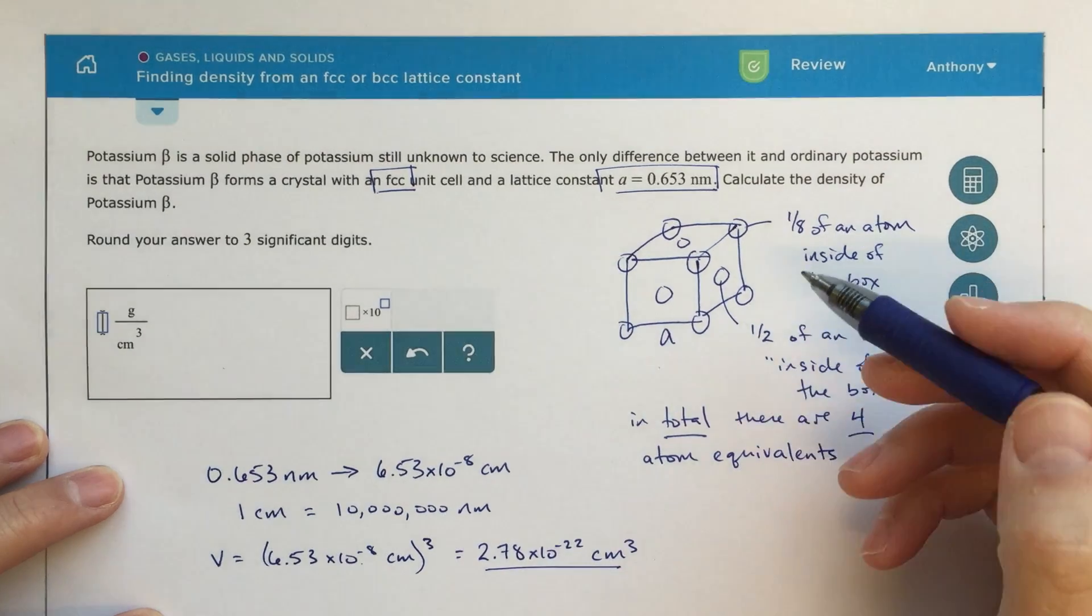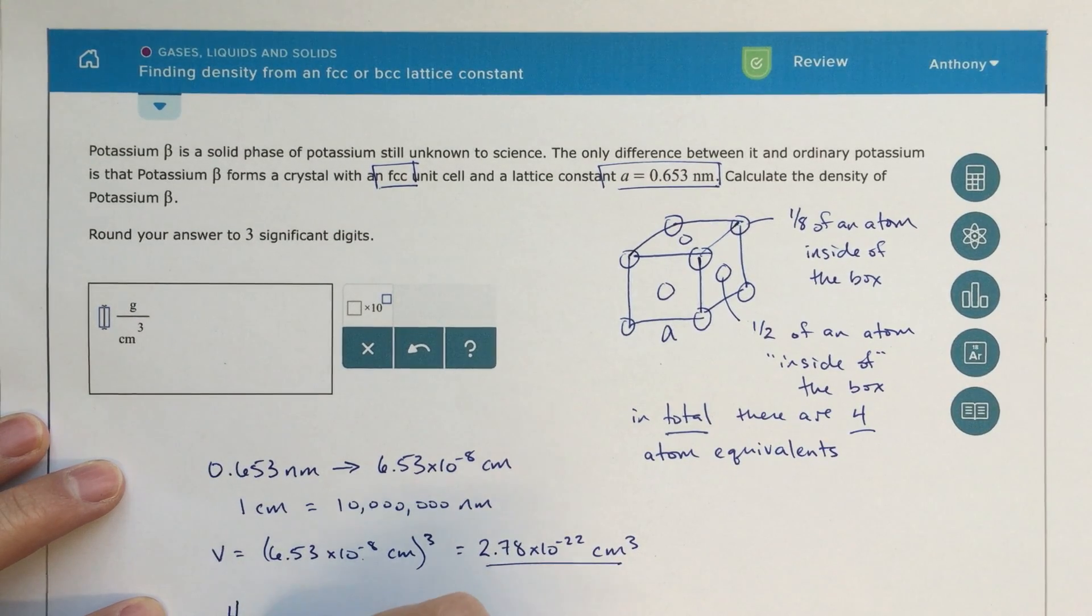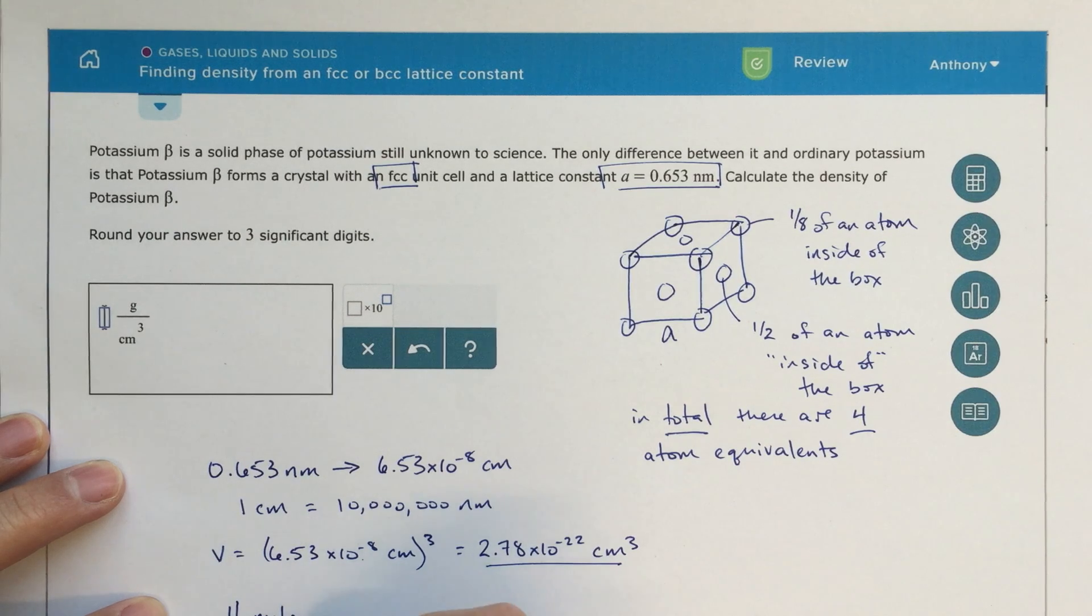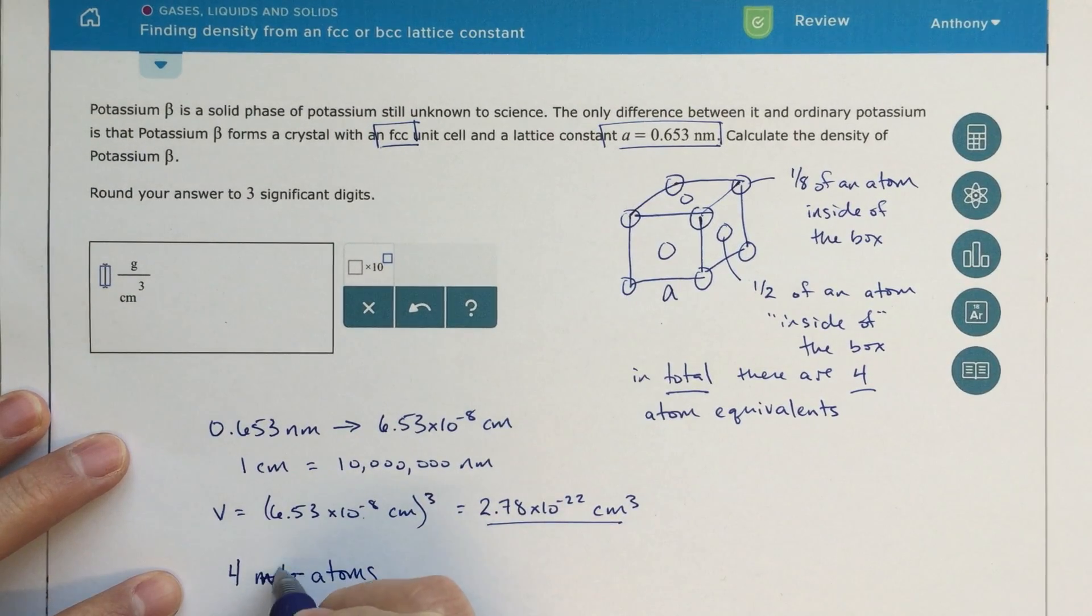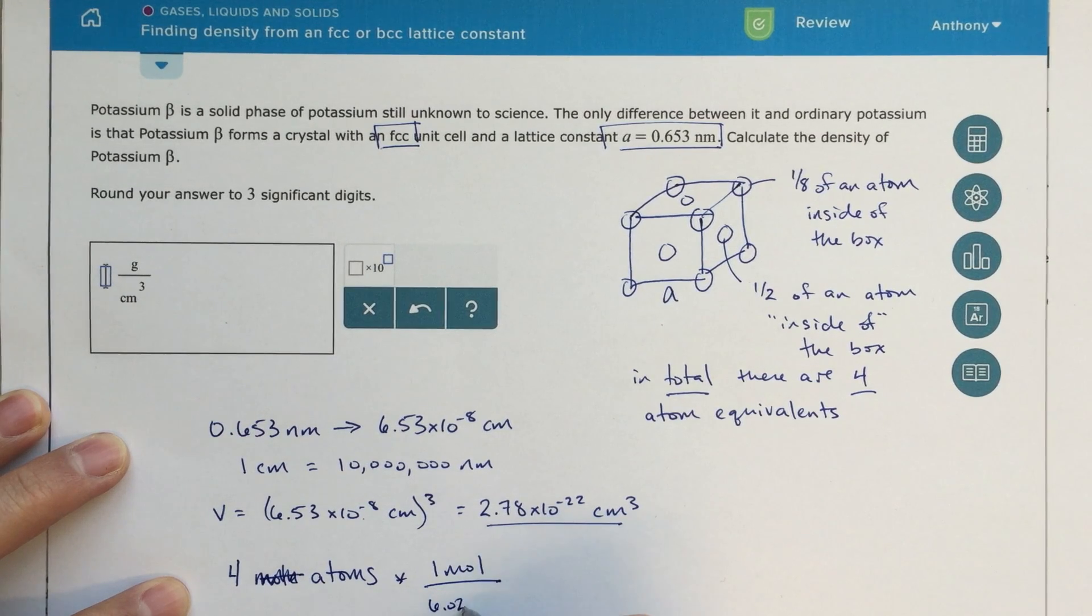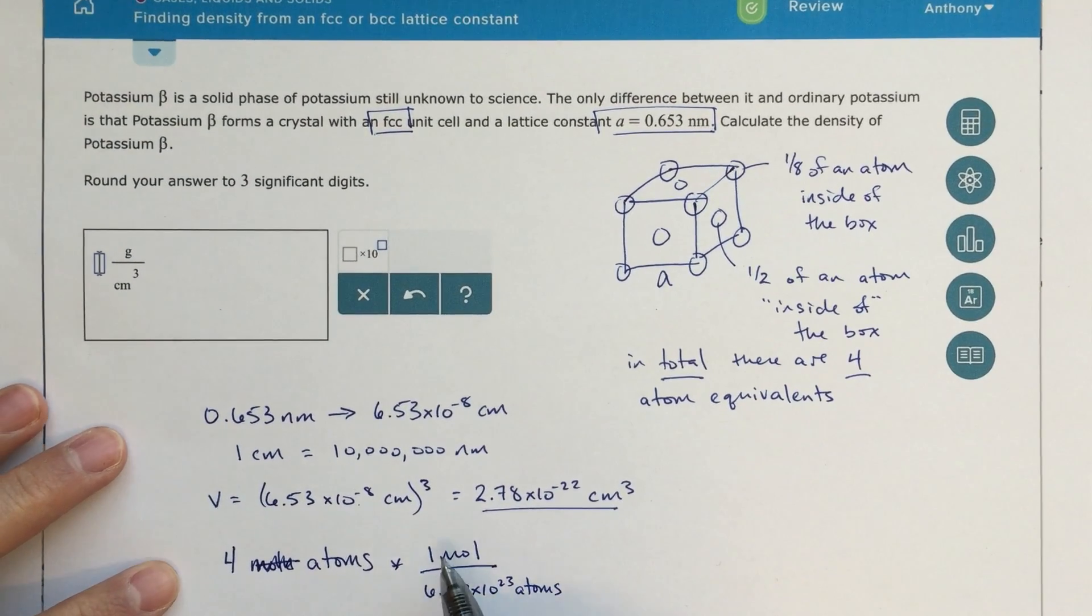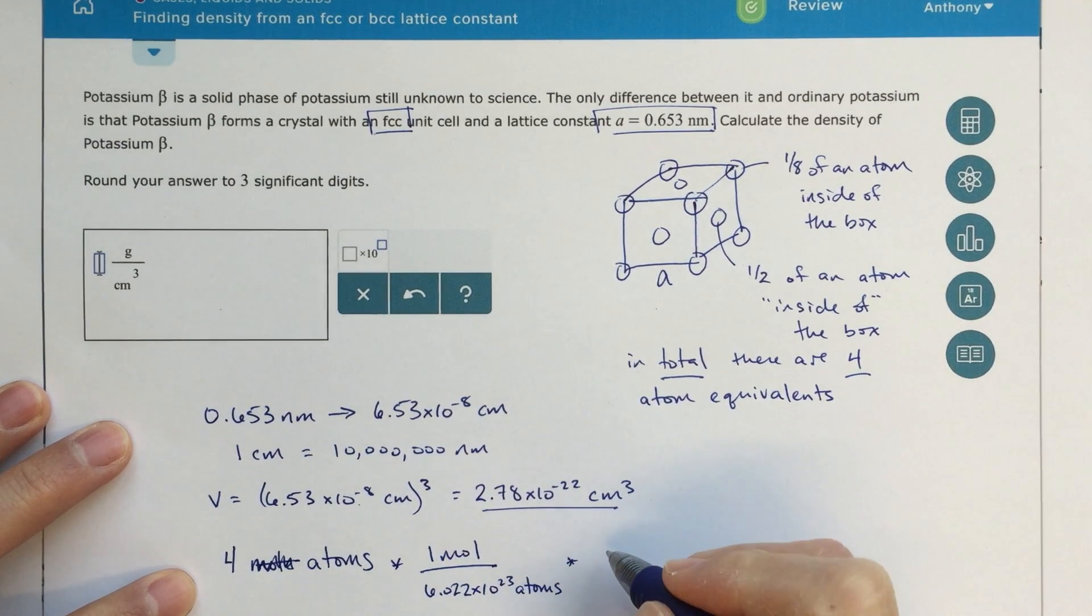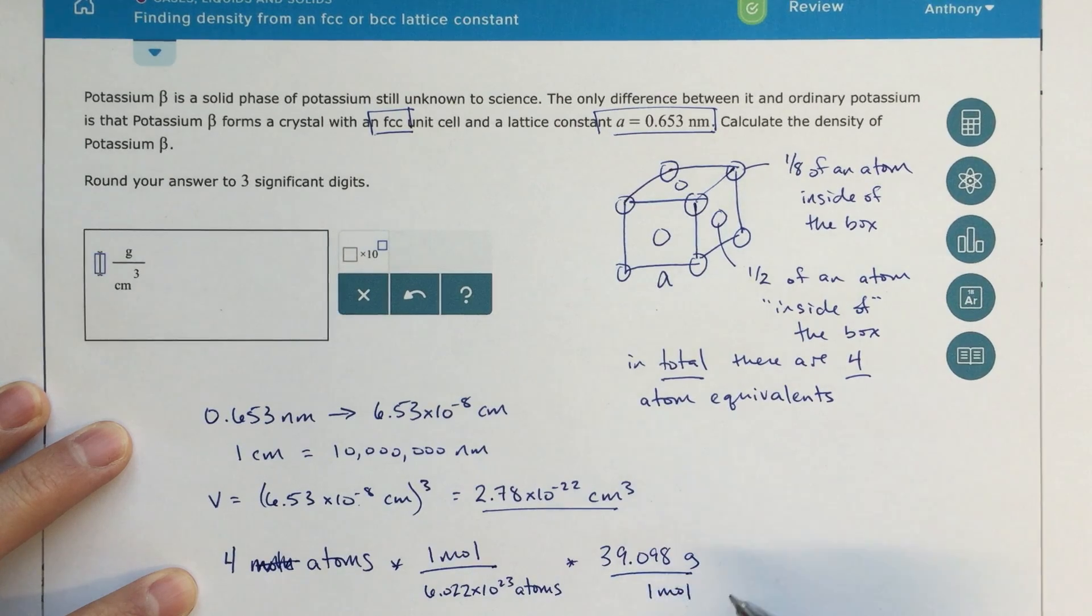Now I'm going to figure out how much mass is in this volume. I'm looking for grams per centimeter cubed. In order to figure out the mass, I know that there's four atoms in my sample. So I might start with four atoms times one mole - I want to convert to moles over Avogadro's number, 6.022 times 10 to the 23rd atoms. That's the definition of Avogadro's number to convert from atoms into moles. Then I'm going to multiply that by the molecular mass of potassium, 39.098 grams over one mole. This is the molar mass of potassium.